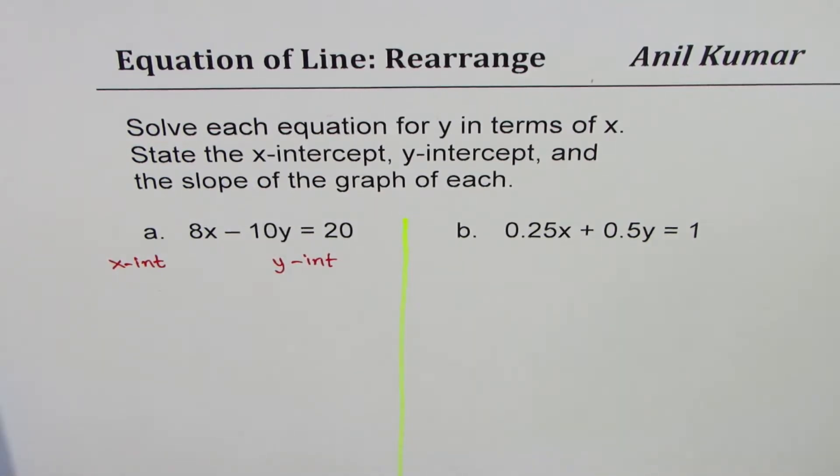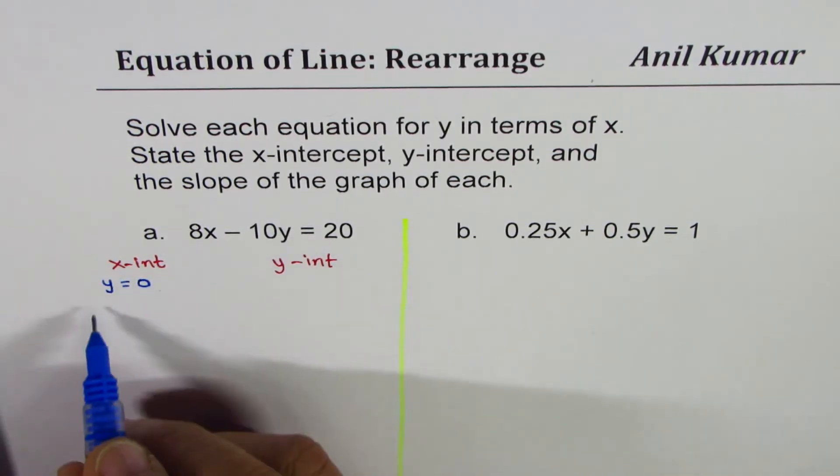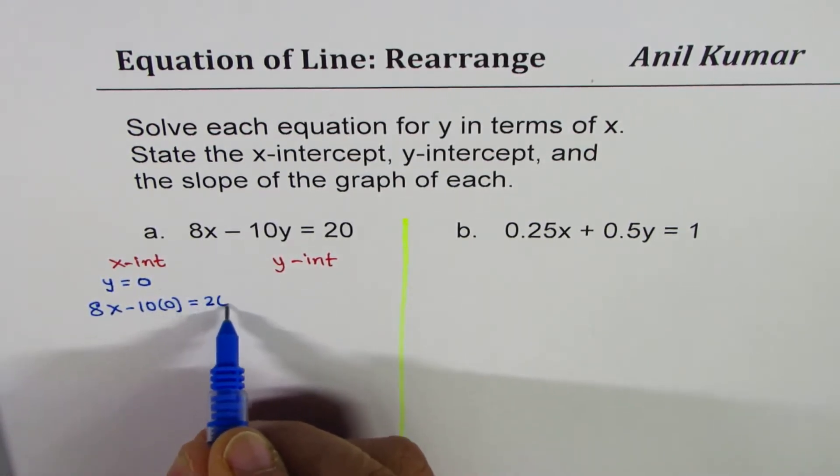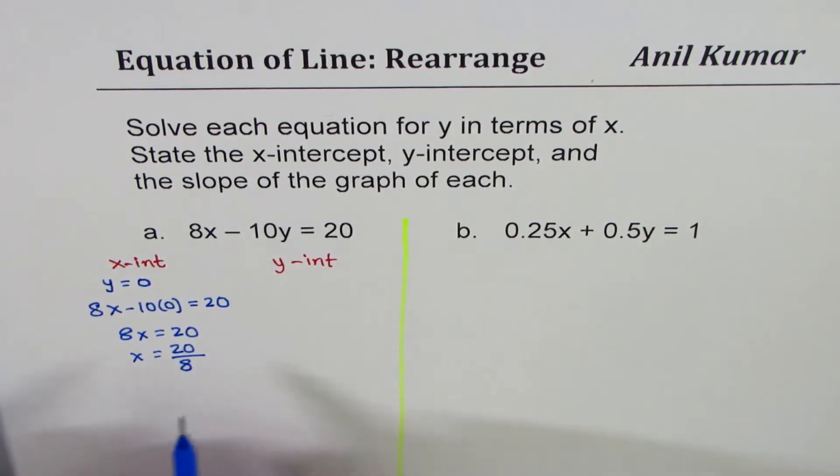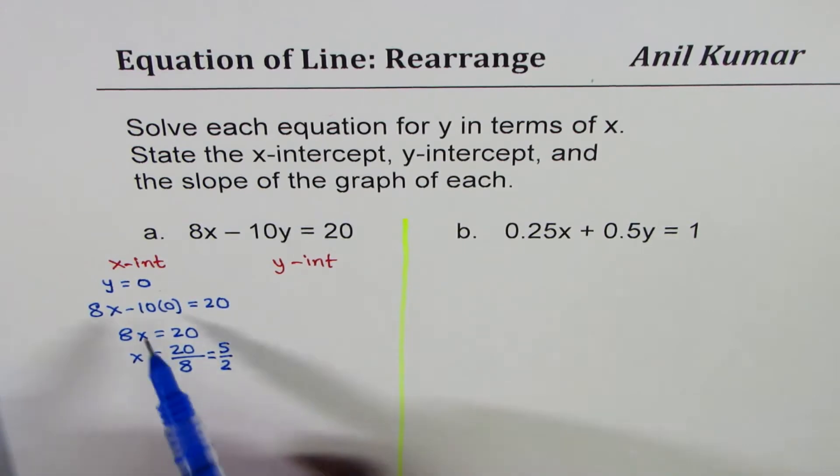What is x-intercept? x-intercept is a point where the graph crosses x-axis and at that point we know y equals 0. So in the given equation, if I write y is 0, what do I get? I get 8x minus 10 times 0 equals 20, that is 8x equals 20, or x equals 20 divided by 8. We could divide both by 4, or we can get 5 over 2. Dividing both by 4, we get 5 over 2. So we got the x-intercept.